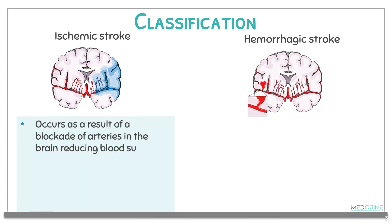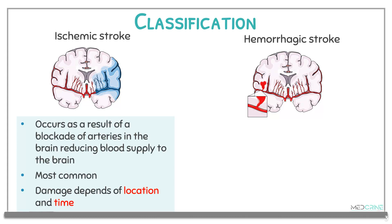Ischemic stroke occurs when there is a blockage of a blood vessel or artery that supplies the brain tissue with blood. This type of stroke is the most common, accounting for about 80% of cases. The damage caused by ischemic stroke depends on the location of the ischemia and the duration of the ischemic effect.